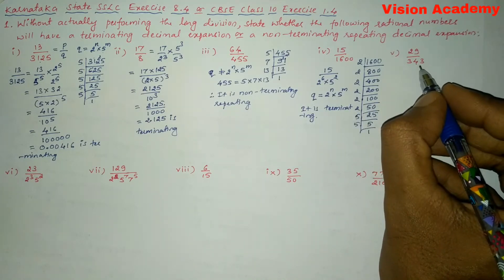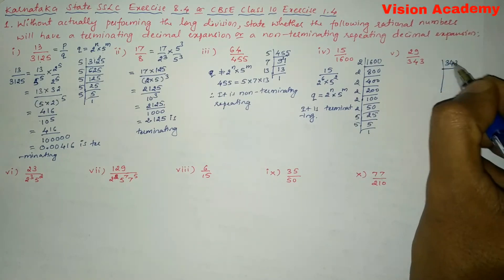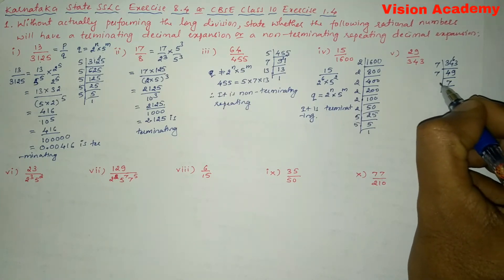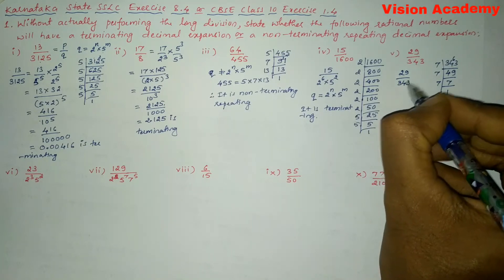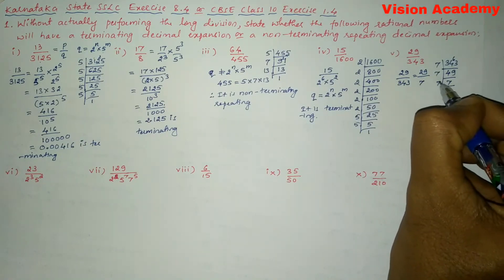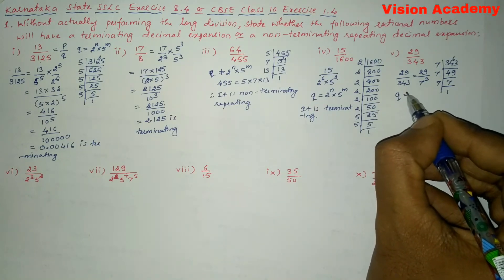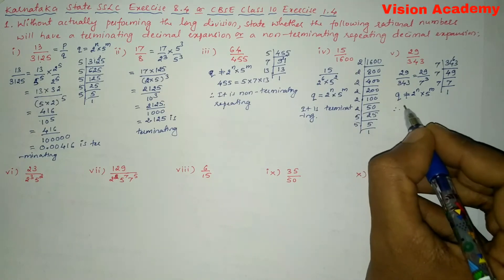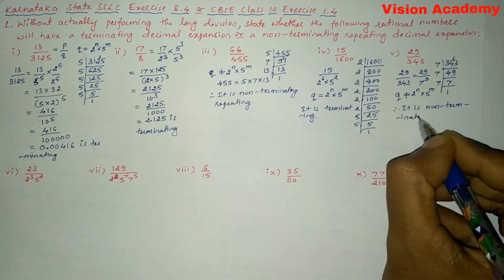Roman number five: 29 divided by 343. Dividing 343 by 7 repeatedly: 343 ÷ 7 = 49, 49 ÷ 7 = 7, 7 ÷ 7 = 1. So 343 = 7 to the power 3. Since the denominator Q is not in the form 2 to the power n into 5 to the power m, it is non-terminating repeating.